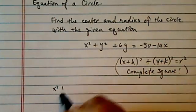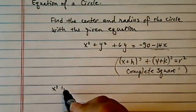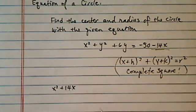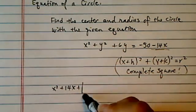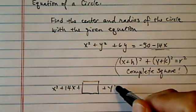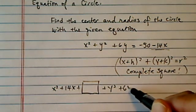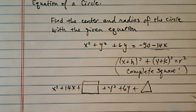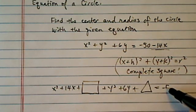I'm going to copy out the terms I have. I'm going to move the 14x over because I'm going to be completing square over the term here. Plus y squared plus 6y, and I'm going to put a triangle over here to distinguish the numbers I'm going to be adding.